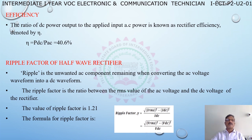Ripple factor of half wave rectifier: ripple is the unwanted AC component remaining when converting the AC voltage waveform into a DC waveform. The ripple factor is the ratio between the RMS value of AC voltage and the DC voltage of the rectifier. The value of ripple factor is 1.21. The formula is: gamma = sqrt((I_rms² - I_dc²)) / I_dc.